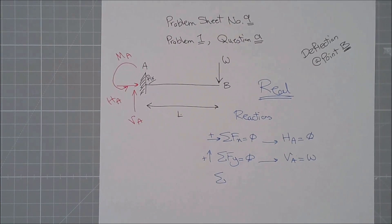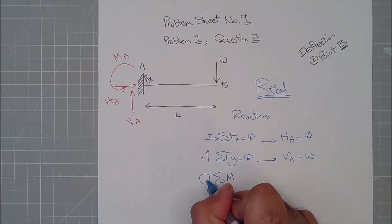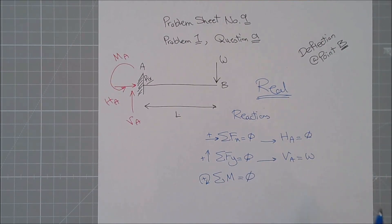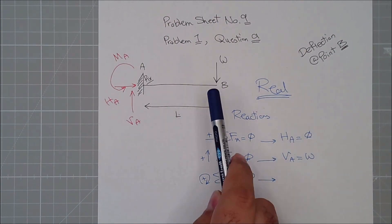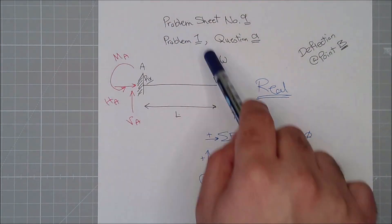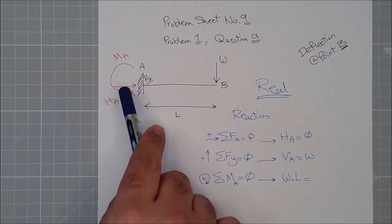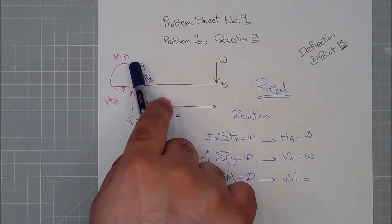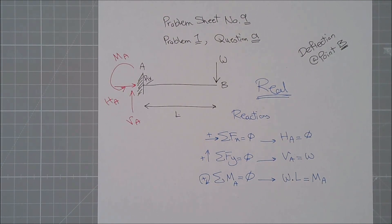Summation of all moments along any point equals zero, considering the positive direction. We usually take moments through the point with the majority of unknowns, so point A. W times its perpendicular distance, going around A clockwise, equals this moment which is anti-clockwise. Bringing it to the other side: MA equals WL. There is nothing else affecting the reactions.